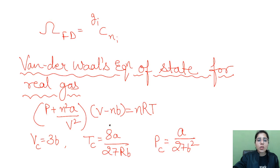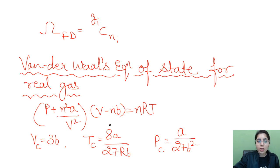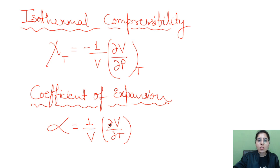The Van der Waals equation of state for real gases with n moles is mentioned here. The critical constants — V_c, T_c, and P_c — and how they relate to the Van der Waals constants a and b are also given. These are important values to know.